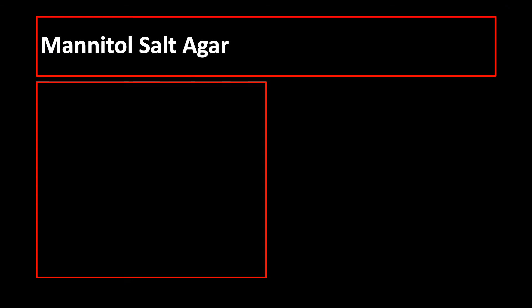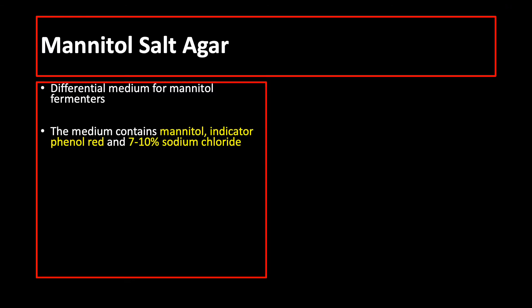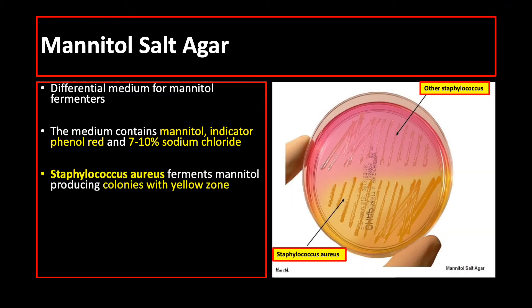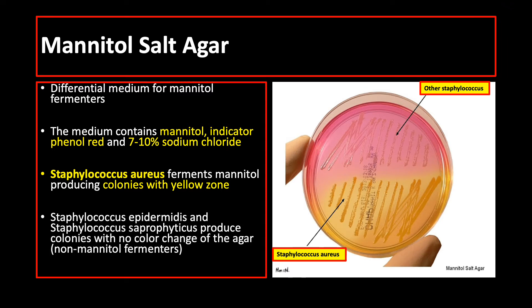Another agar that may differentiate Staphylococcus aureus from Staphylococcus saprophyticus and Staphylococcus epidermidis is the mannitol salt agar. This is a differential agar for mannitol fermenters like Staphylococcus aureus. This agar contains mannitol, the indicator is phenol red, and it also contains 7 to 10% sodium chloride. Staphylococcus aureus ferments mannitol, so it produces colonies with a yellow zone. Other Staphylococci produce colonies with no color change of the agar; therefore, they are non-mannitol fermenters.